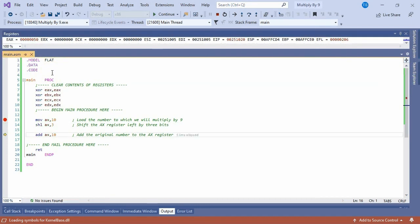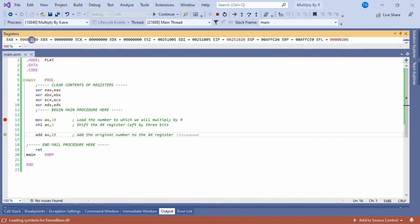Pressing F11 again will execute the SHIFT LEFT instruction, shifting the bits in the AX register three times to the left. Now the AX register contains 50 hex, which is the decimal value 80.